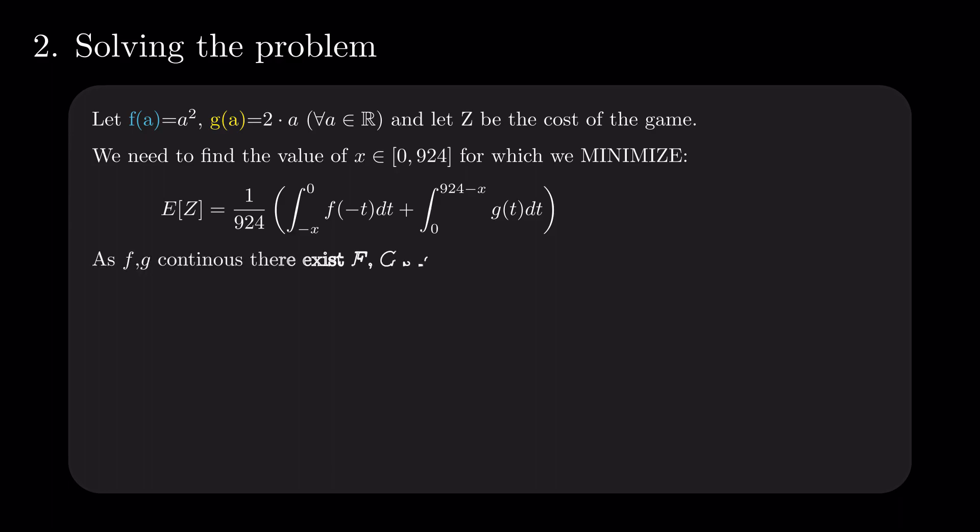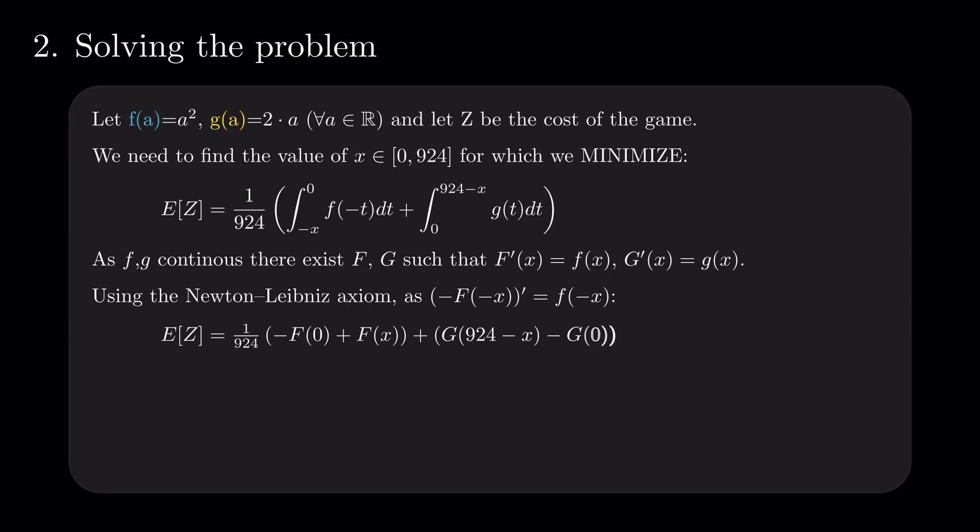Since f and g are continuous, there exist capital F and capital G primitives of f and g. Using the Newton-Leibnitz axiom, we get a formula for the expectation that depends on capital F and capital G only, involves no integrals, and is defined by only x.